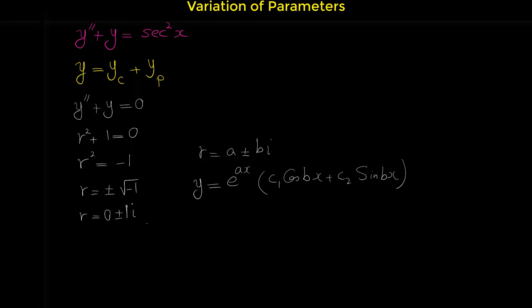Note that here a is 0 and b is 1. So because a is 0, e to the 0x equals 1, so we don't need to write that part. The complementary solution simplifies to c sub 1 cosine x plus c sub 2 sine x.